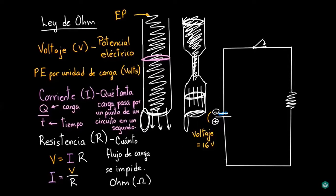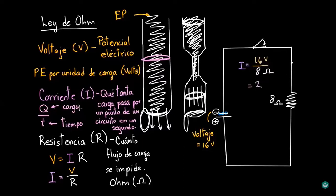Con un voltaje de 16 volts y una resistencia de 8 ohms, ¿cuál es la corriente que pasa por este circuito? Para responder usamos la Ley de Ohm: despejamos la corriente y sustituimos los valores. La corriente es igual al voltaje entre la resistencia: 16 volts entre 8 ohms es igual a 2. La unidad de la corriente es carga entre tiempo — 2 coulombs por segundo, o 2 amperes, denotados con la letra A mayúscula. Esto se cumple para todos los puntos en el circuito.